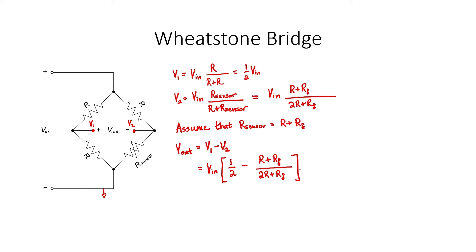Looking at the resulting equation, we can see that the Wheatstone Bridge solves the two problems present in the potential divider. First, if the Wheatstone Bridge is balanced — that is, if the sensor is at its nominal value — then the output voltage is zero. That means we don't have any large DC offset. Voltage measurements tend to be more accurate if they don't have a large DC offset to contend with.